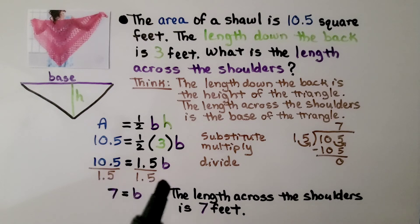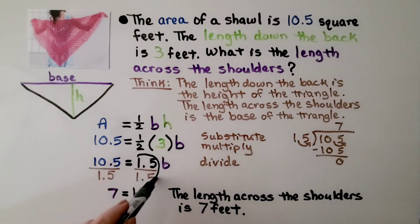We divide both sides of the equal sign by this coefficient, 1.5. We get the same numerator and denominator, so that's a 1. So we have 1b, but we don't write a 1 coefficient with a variable.